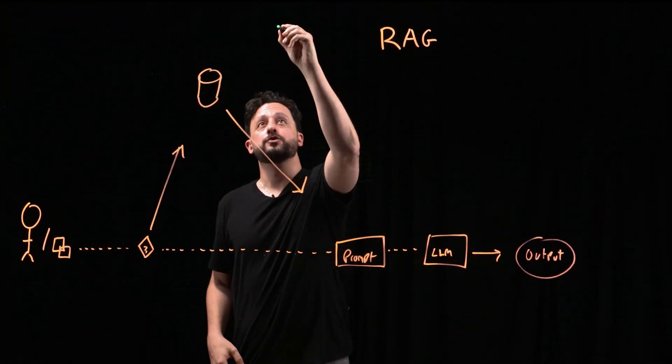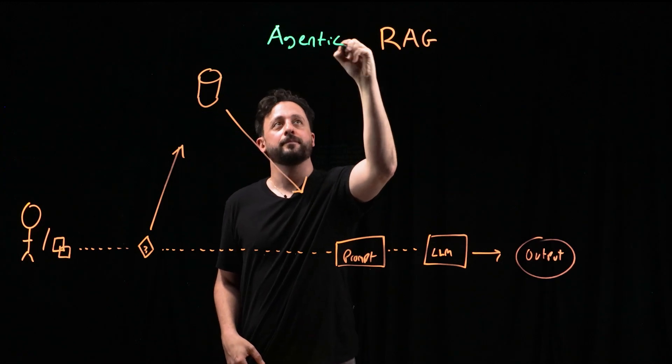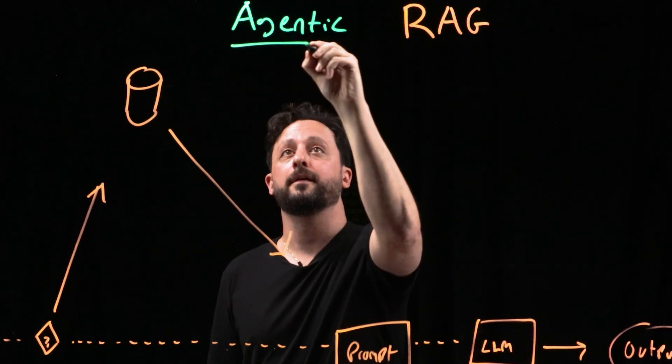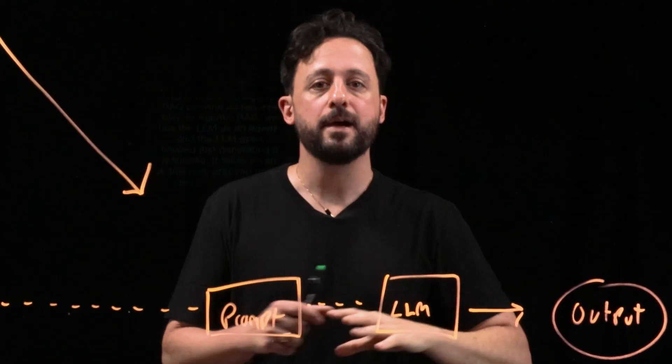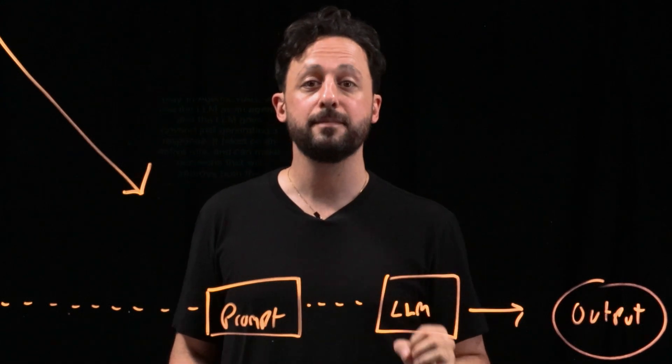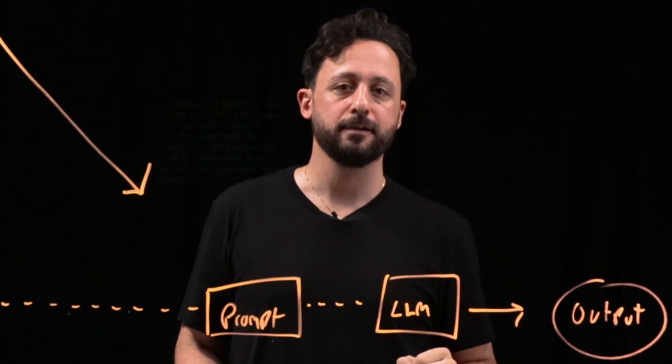So this is where the agentic RAG pipeline comes into play. In agentic RAG, we use the LLM as an agent. And the LLM goes beyond just generating a response. It takes on an active role and can make decisions that will improve both the relevance and accuracy of the retrieved data.